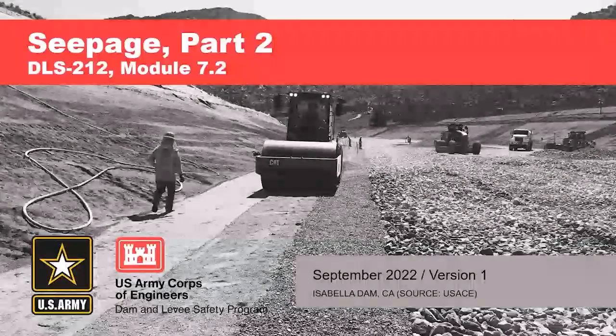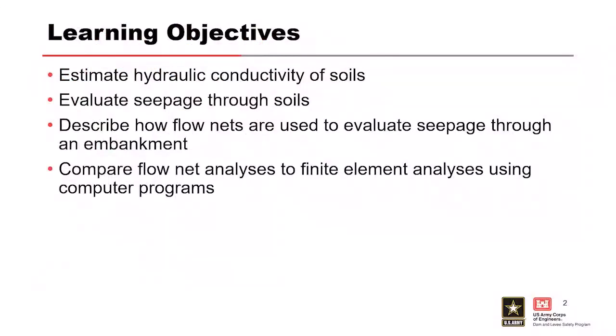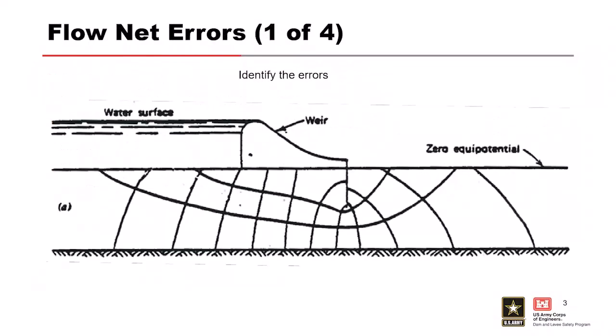I'm going to ask some questions, so we're going to keep going with seepage. Get through the learning objectives, because you've probably seen that three or four times now. So now we're going to go through a few different flow nets and see if I can get some answers about some errors that people might see in this.